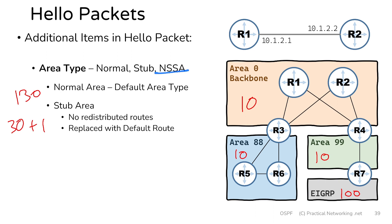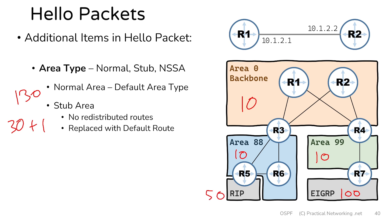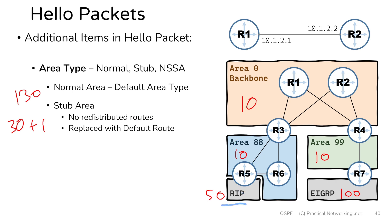Which brings us to the last area type, NSSA. We're going to change our topology slightly — router 5 will redistribute some RIP routes. The specific protocol is arbitrary; these concepts apply to any form of redistribution. Let's say there are 50 routes in this RIP domain and router 5 is going to be redistributing all 50 of these routes into area 88. Remember, area 88 was a stub area, and in a stub area no redistributed routes can exist — meaning the routers in area 88 will not accept a redistributed route from this external domain. Plus, the default route is pointing to the ABR, away from the ASBR. So if area 88 was left as a stub area, there would be no connectivity to the 50 networks in this RIP domain.